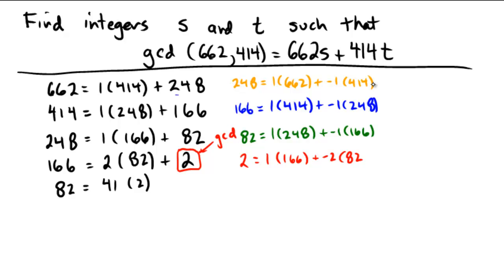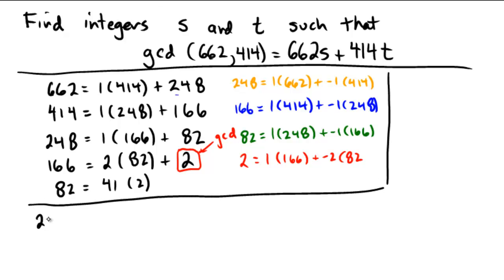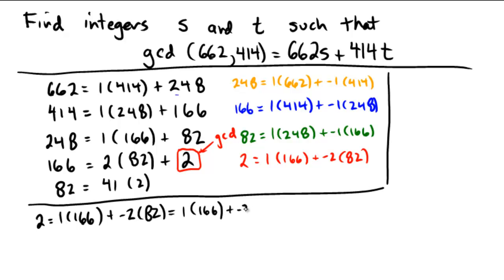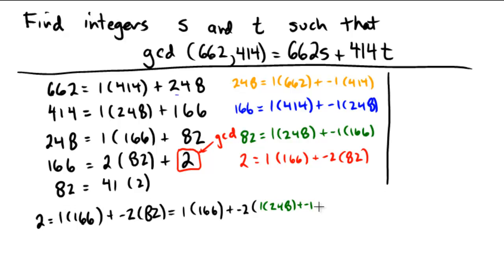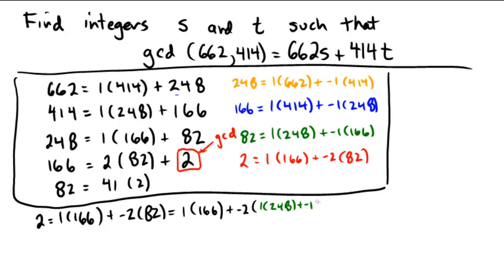Now I have all the pieces I need to write this together, so let's go down that path and try to get this final answer. We'll start off and say that 2 is equal to 1 times 166 plus negative 2 times 82 — that's from the bottom one, that's our starting off in red. Now I'm going to take that 82 and replace it with its green quantity: 1 times 166 plus negative 2 times its green 82, which is 1 copy of 248 plus negative 1 copies of 166.